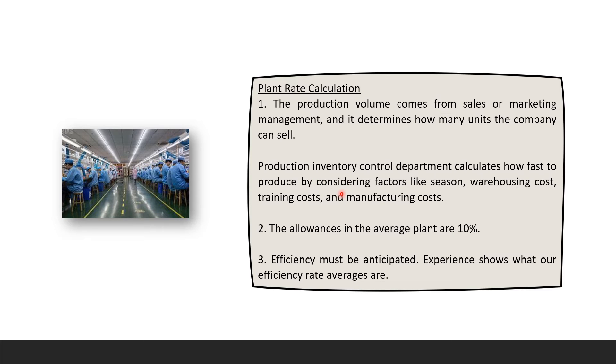Overtime we can't hide these things. Allowances in the average plant - we go by allowances, which is definitely necessary because it's going to determine what our efficiency rate average is.